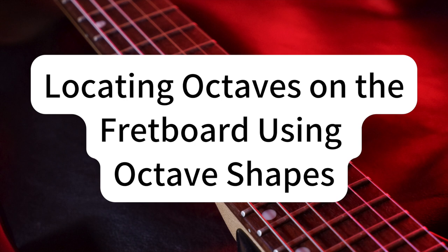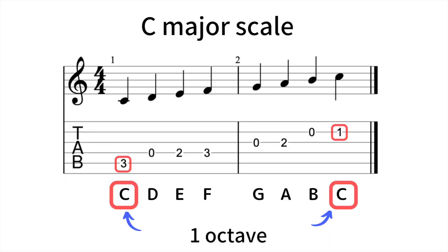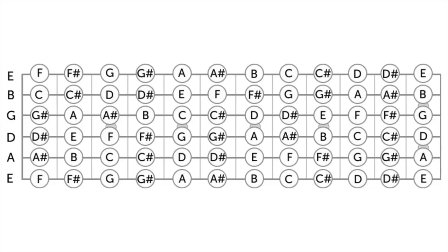Knowing the notes on the sixth and fifth strings forms a robust start, but we obviously want to expand our knowledge to all the strings. An effective strategy for this is by employing octave shapes. In musical terms, an octave refers to the interval between one musical pitch and another with double its frequency — essentially the same note, albeit higher or lower in pitch. On the guitar, we can locate octaves by identifying specific patterns or shapes on the fretboard. Start on any note on the sixth string — for example the third fret, which is a G. Bypass the fifth string and move two frets up on the fourth string, and you end up on the fifth fret of the fourth string, which is also G, an octave higher.